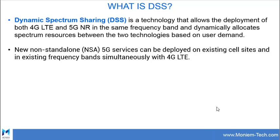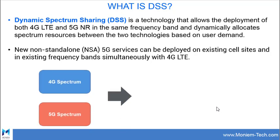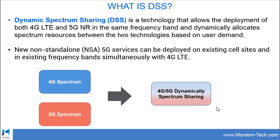Instead, they can share the full 20 megahertz of spectrum between both technologies — 4G and 5G. So in brief, DSS allows the total available spectrum to be dynamically shared rather than statically partitioned.